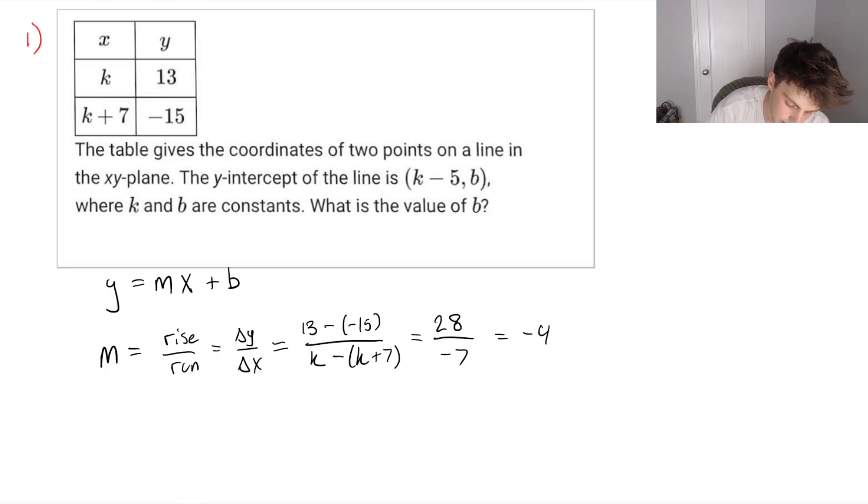So we have our slope, we've got this m, and we're looking for b. And we have three different points, so we can just plug in a point and find our value of b. So first off, let's notice as well, at the y-intercept, we have k minus 5 as our x value.